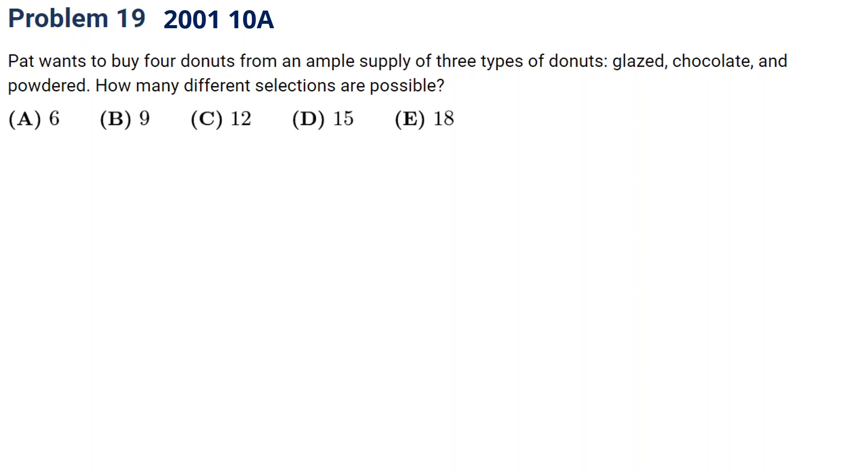Okay, let's take a look. We have three types of donuts. Let's say it's A, B, C - three types.